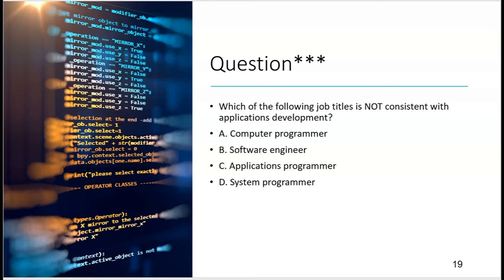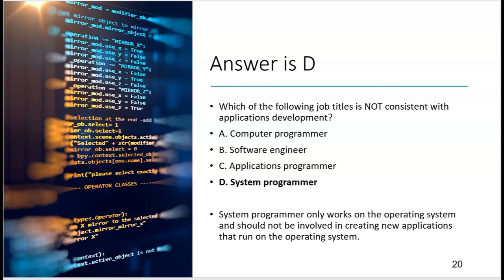Which of the following job titles is not consistent with applications development — i.e., who's not wearing a yellow shirt? Computer programmer, software engineer, and applications programmer all describe the same role. But system programmer is a red-shirt role. When you see 'system programmer,' think operating system; when you see 'computer programmer,' think applications programmer. The system programmer only works on the operating system and should not be involved in creating new applications that run on it. The answer is D — system programmer.